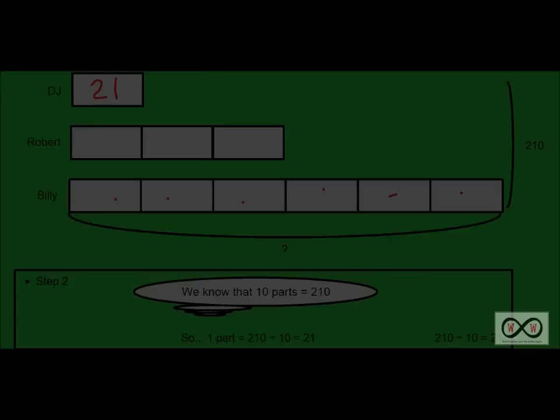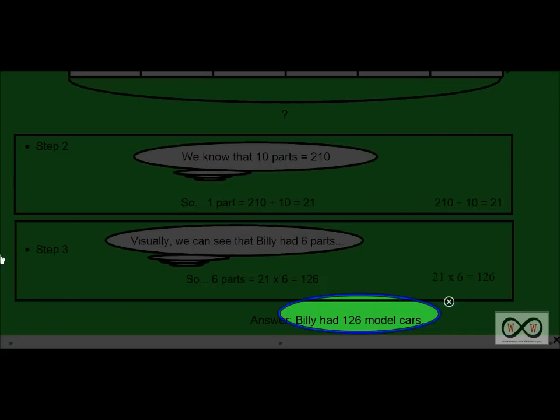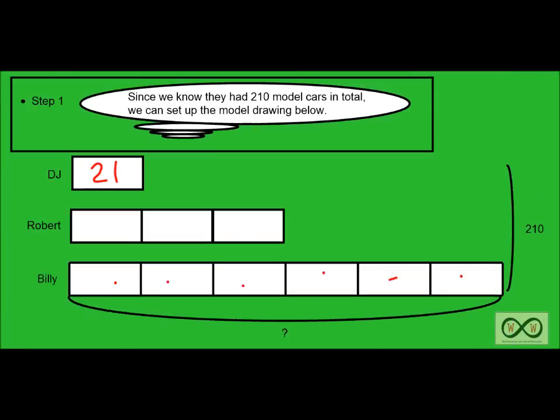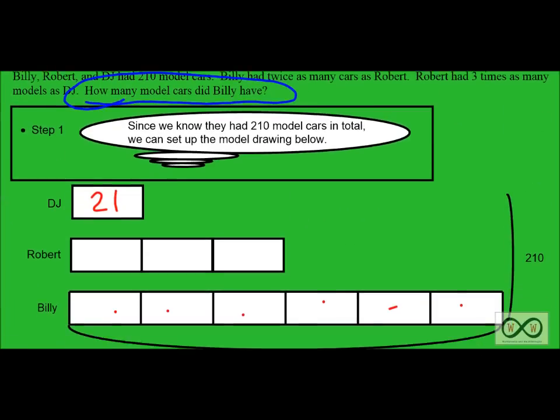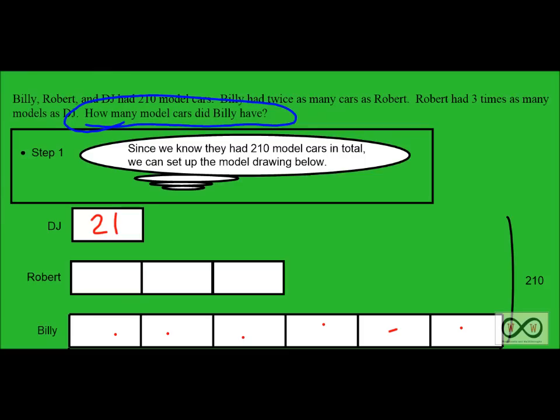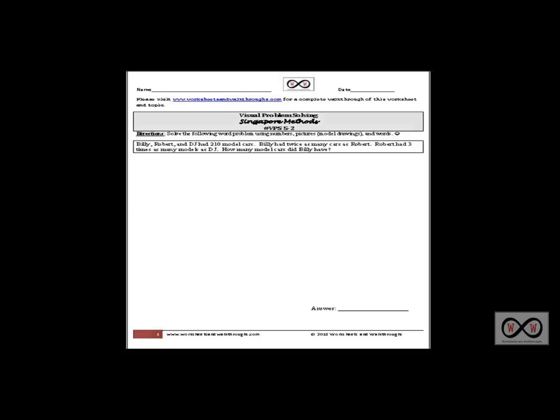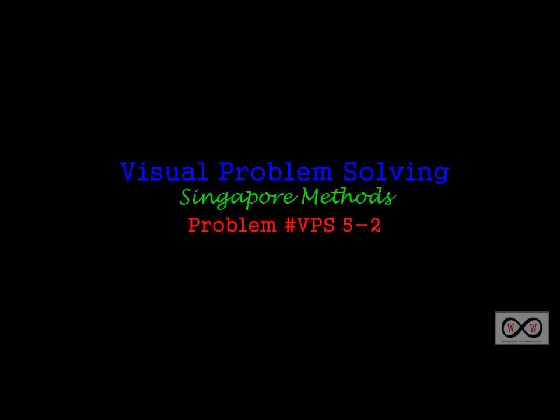And our answer is Billy had 126 model cars. Do we answer our math job? Let's go up and check. It's always a good idea to check. How many model cars did Billy have? Absolutely. We did solve our math job. Billy had 126 model cars. And that was another quick look at model drawing. This time we used a model that involved multiples of 21. This was worksheet VPS 5-2. Thanks for checking out worksheets and walkthroughs.com. We'll see you again next time.